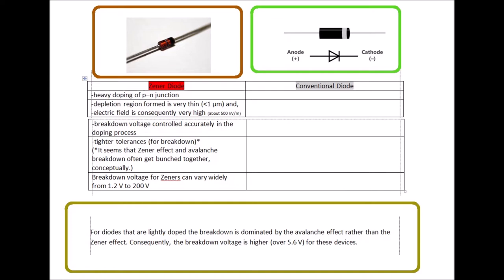Zener diode. Heavy doping of PN junction. Depletion region formed is very thin. And thus, the electric field is consequently very high. Breakdown voltage is controlled accurately throughout the doping process in manufacture. Tighter tolerances for breakdown are a feature.